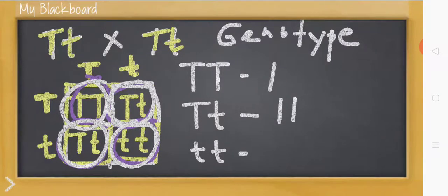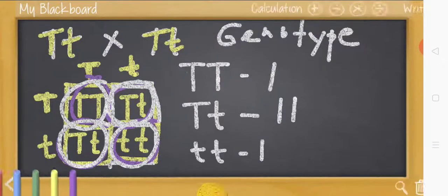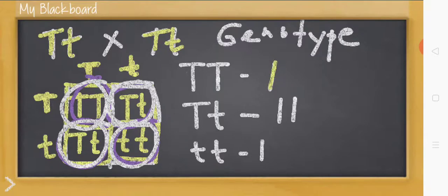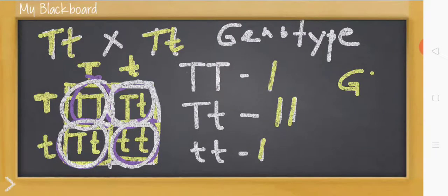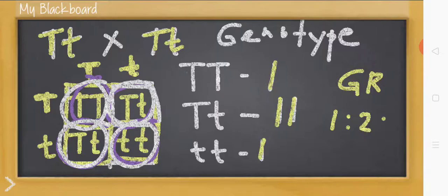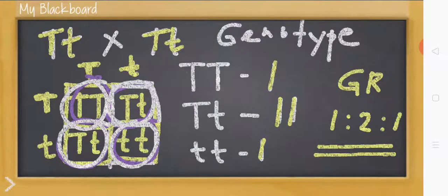So we have one homozygous tall which is 25%, two heterozygous tall or hybrid which is 50%, and one homozygous short or recessive trait which is 25%. The genotypic ratio is therefore 1:2:1 — one homozygous tall, two heterozygous tall, and one homozygous short.